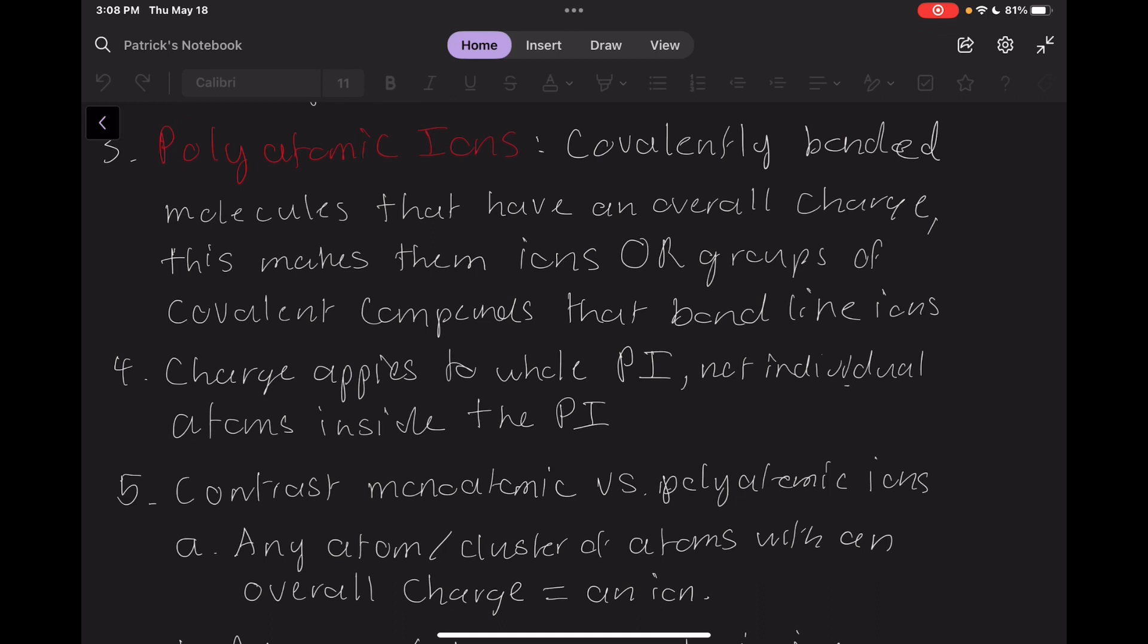Now that we've looked at an example of a polyatomic ion, let's give ourselves a definition in words. Polyatomic ions are covalently bonded molecules that have an overall charge. Another way of thinking about it is that a regular ion is an atom with an overall charge, whereas a polyatomic ion is a molecule with an overall charge.